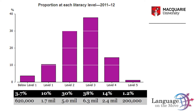The next level up is called level 1. To score at level 1, as 10% of adult Australians or 1.7 million people do, respondents need to read relatively short texts. They need to locate a single piece of information that is identical or synonymous with the information given in the question or directive, recognize basic vocabulary, and be able to read paragraphs of text.